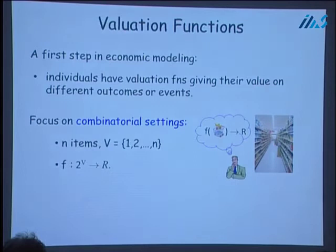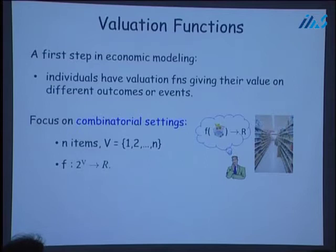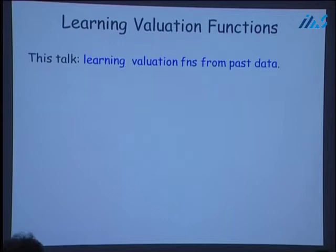In this talk, I will be focusing in particular on combinatorial settings where we assume that we have a set of N items. For example, this can be the set of items for sale in a supermarket, and the valuation function here is over a bundle or subset of the items that the customer might be considering. The specific question I'm going to look at is: if we don't know the valuation function of a customer, can we learn it from past or observed data?